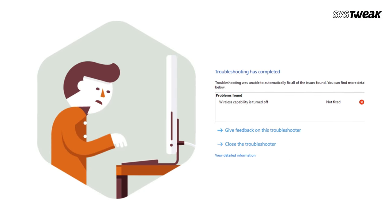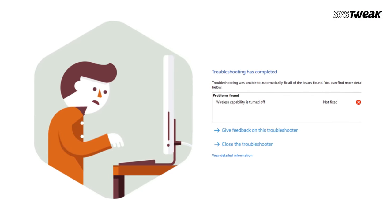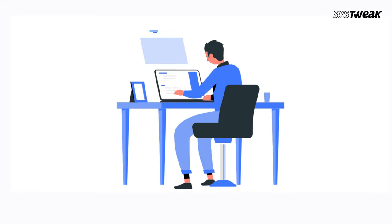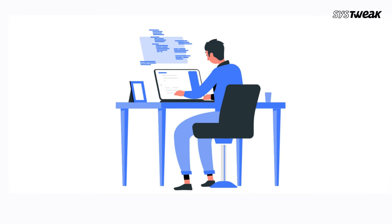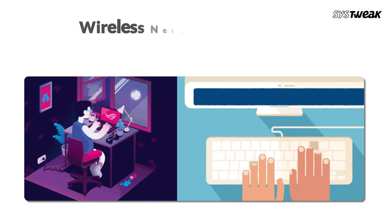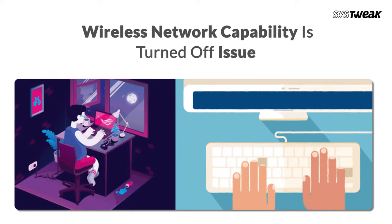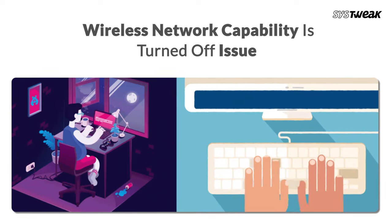If you are encountering the 'wireless capability is turned off' error message while browsing the internet on your Windows computer, don't panic. In this video, I'll show you how to fix the wireless network capability is turned off issue.